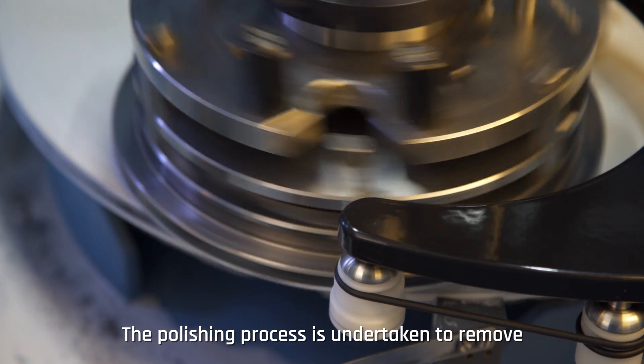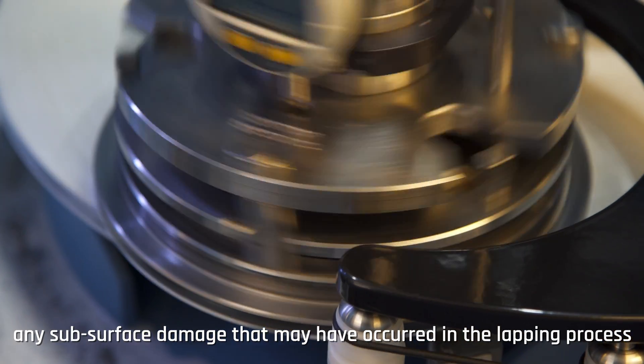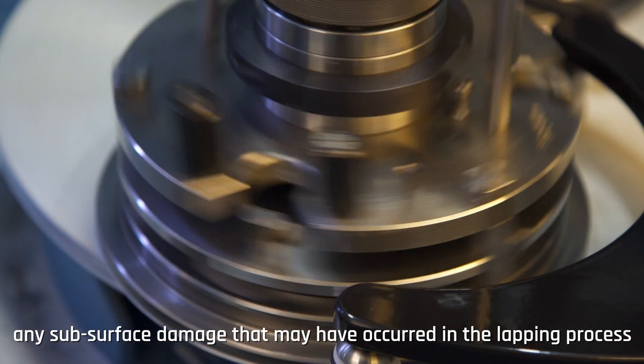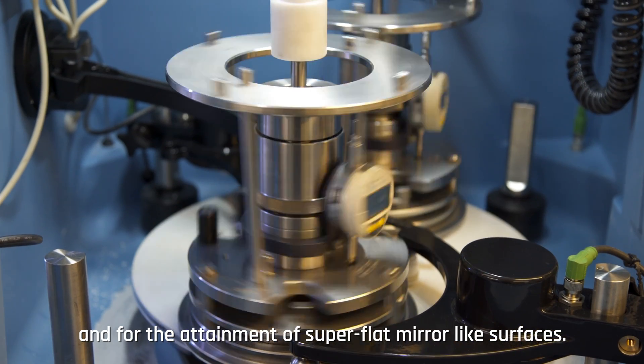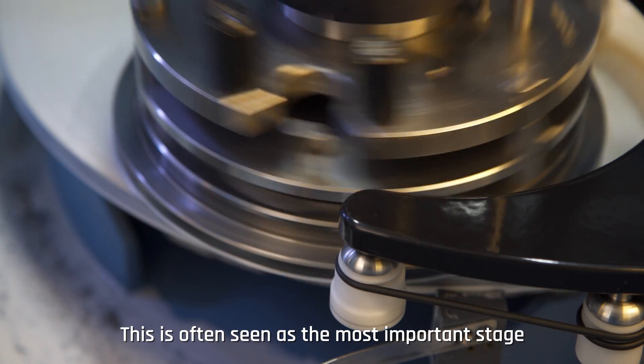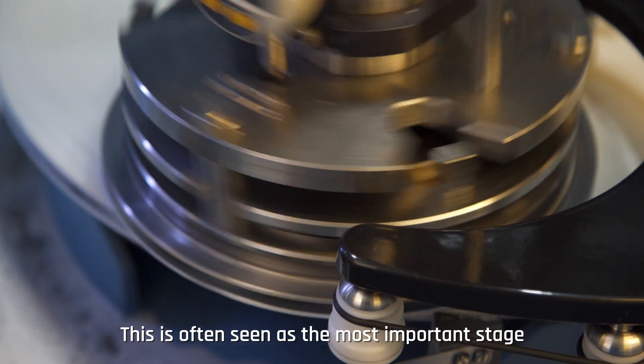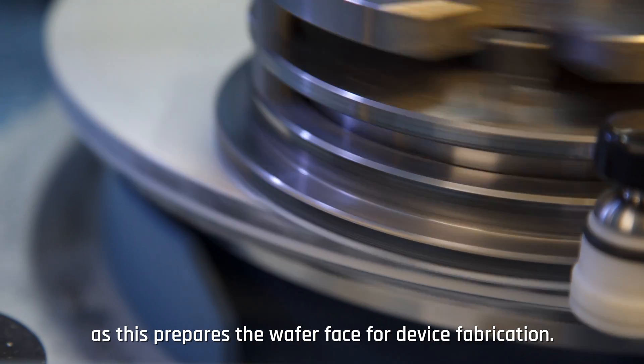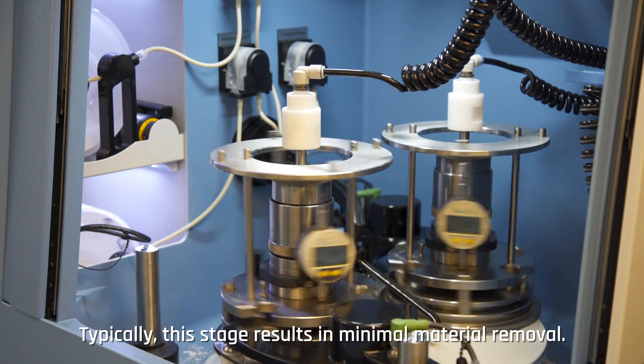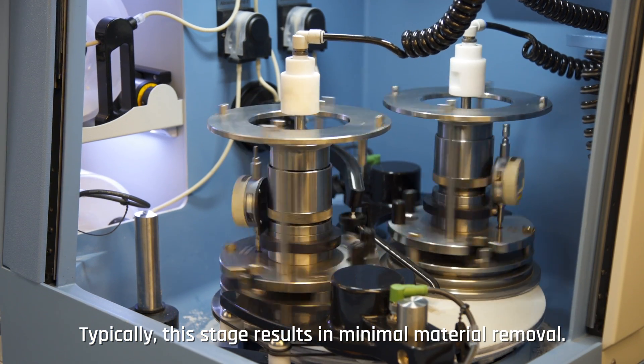The polishing process is undertaken to remove any subsurface damage that may have occurred in the lapping process and for the attainment of super flat, mirror-like surfaces. This is often seen as the most important stage as this prepares the wafer face for device fabrication. Typically this stage results in minimal material removal.